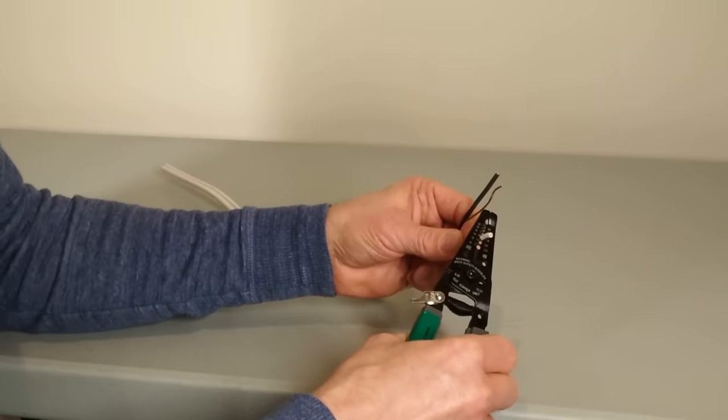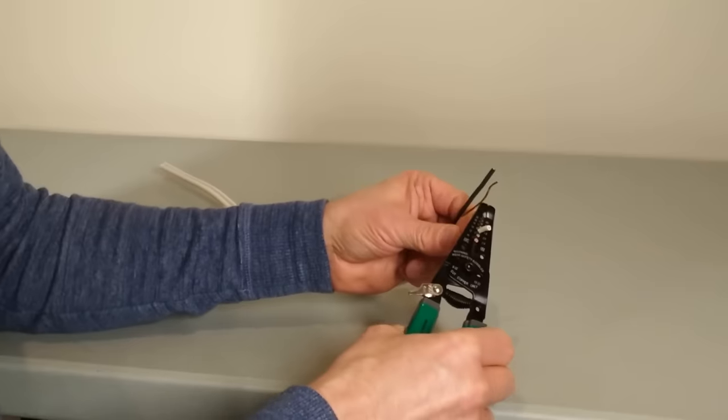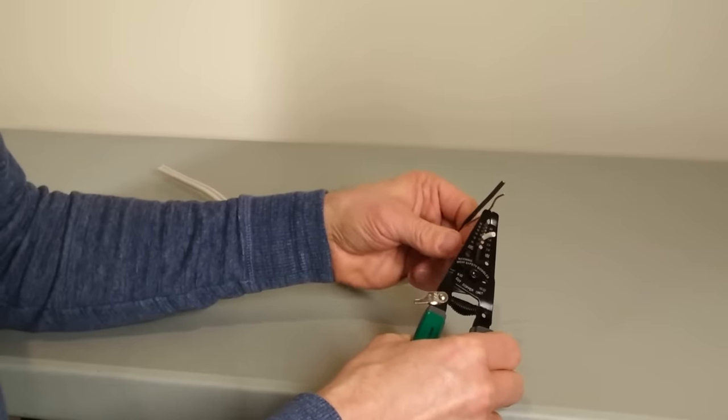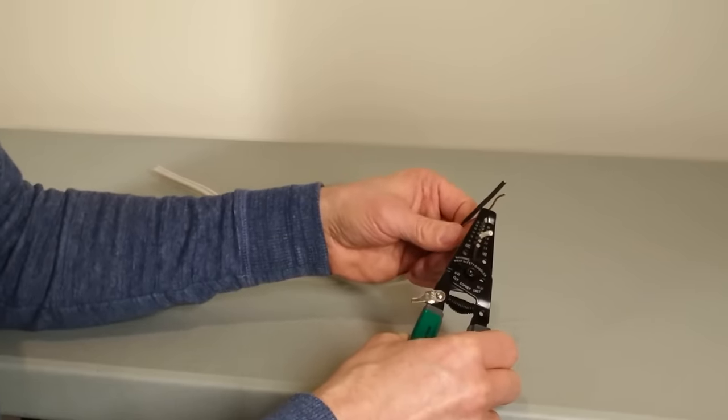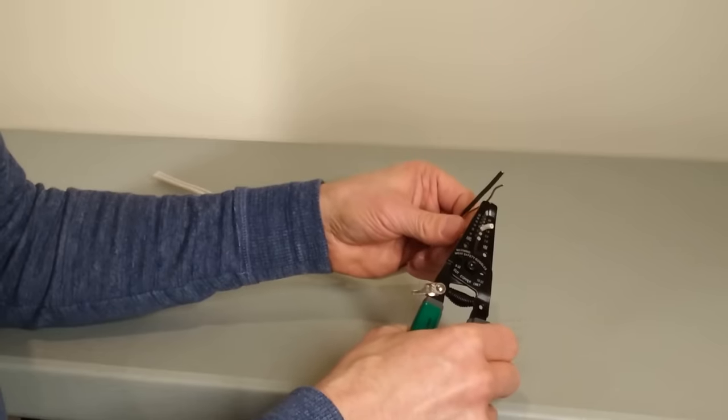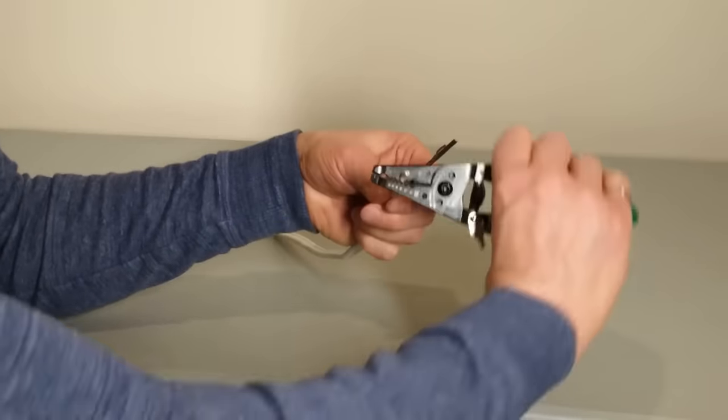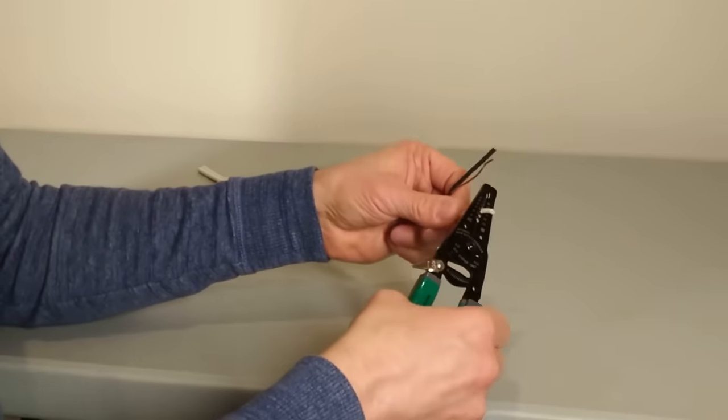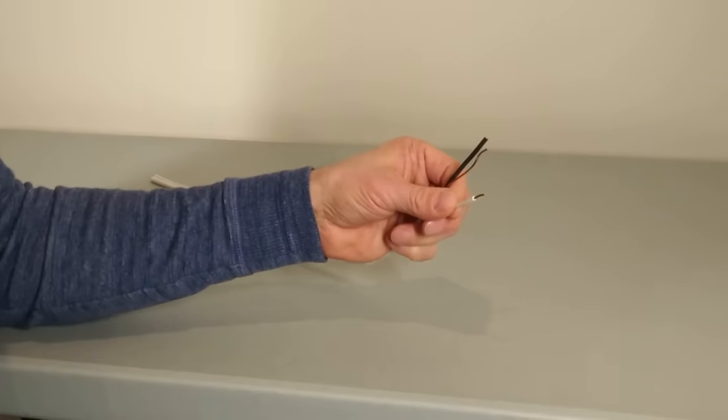Now that may work sometimes, but often it doesn't, like it doesn't here. Why? Because the cutters didn't cut all the insulation all the way around. So best practice is to close the cutters and then quarter turn each way, and then the insulation comes off easily.